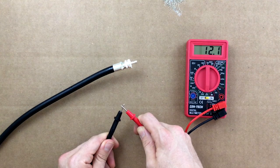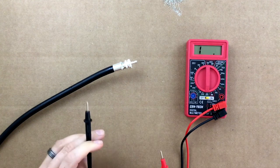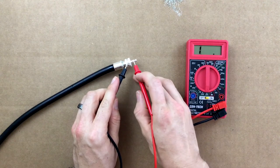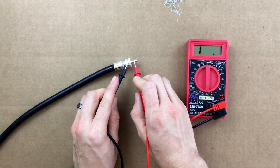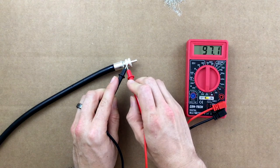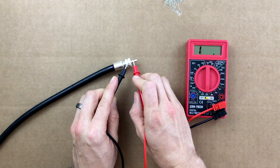This is what you do not want to see in your installation. Touch one lead to the body and one lead to the center pin of the connector. My meter is reading that there is infinite resistance so my installation is working perfectly. Be sure to turn off the meter when done to conserve its battery.